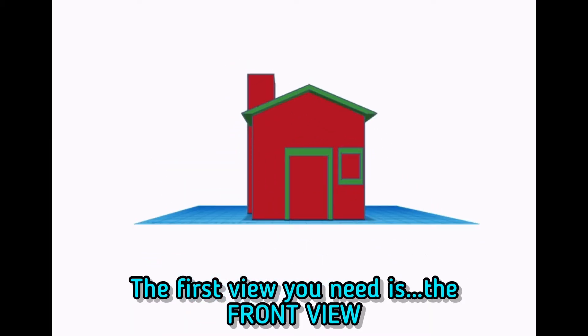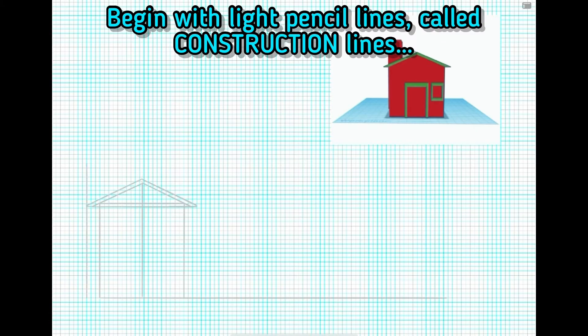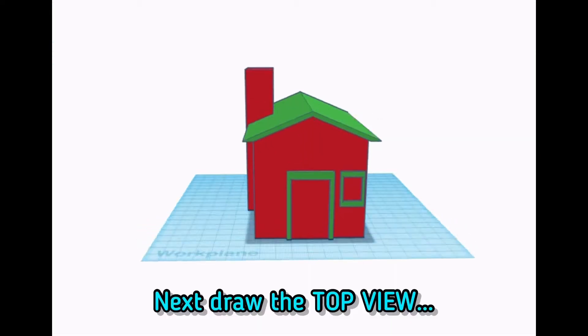The first view you need is the front view. The front view goes in the bottom left corner of the drawing. Begin with light pencil lines called instruction lines. Darken the object lines once they're in the correct place.